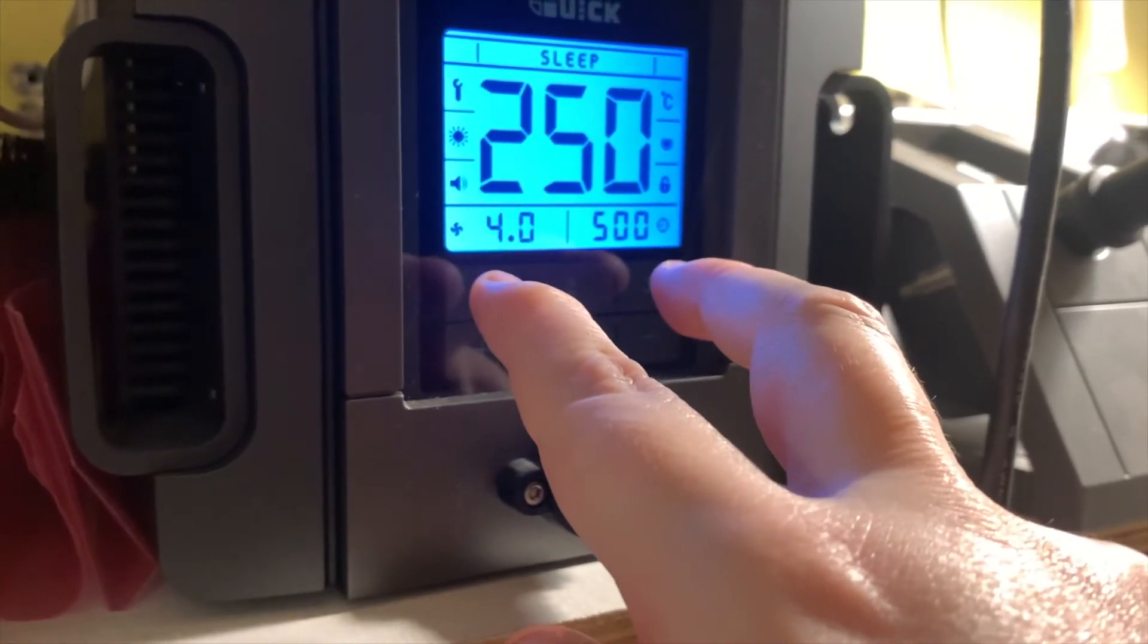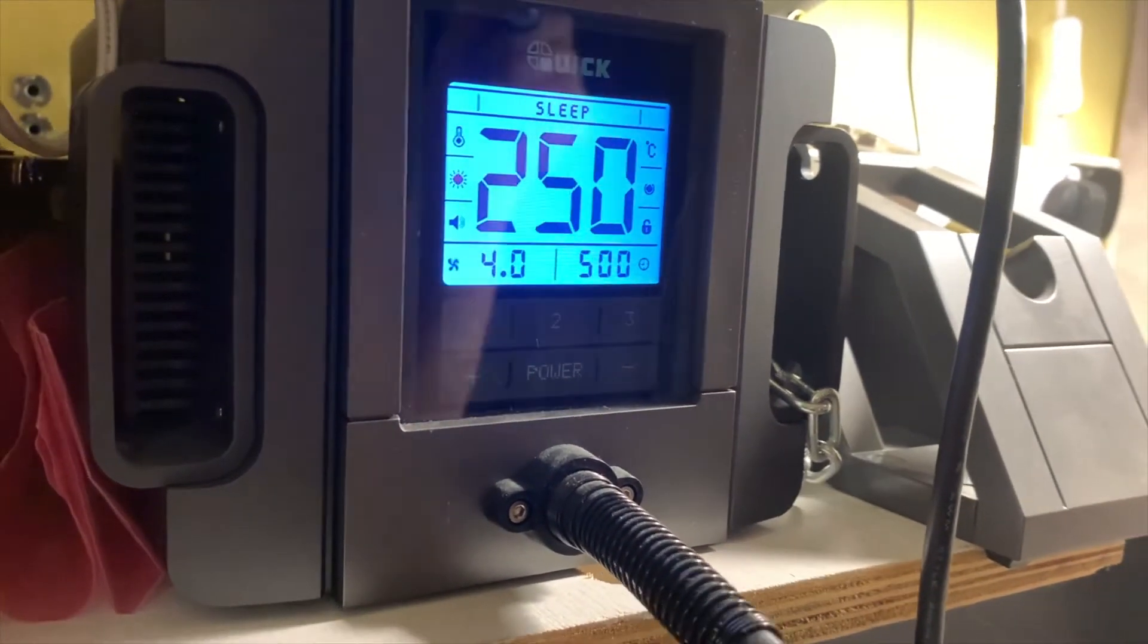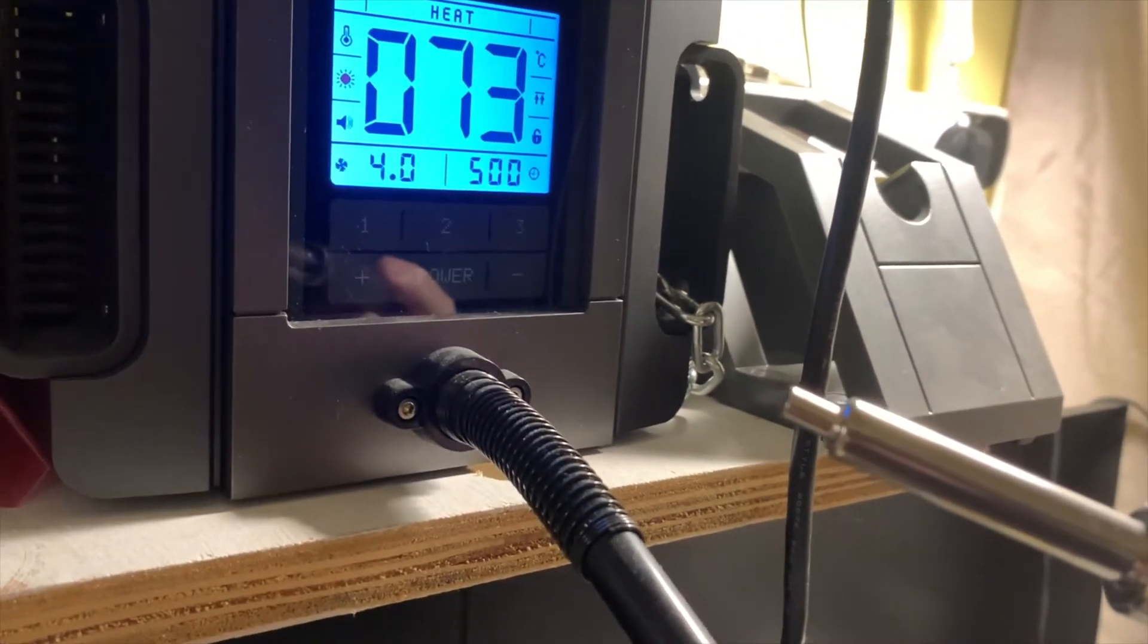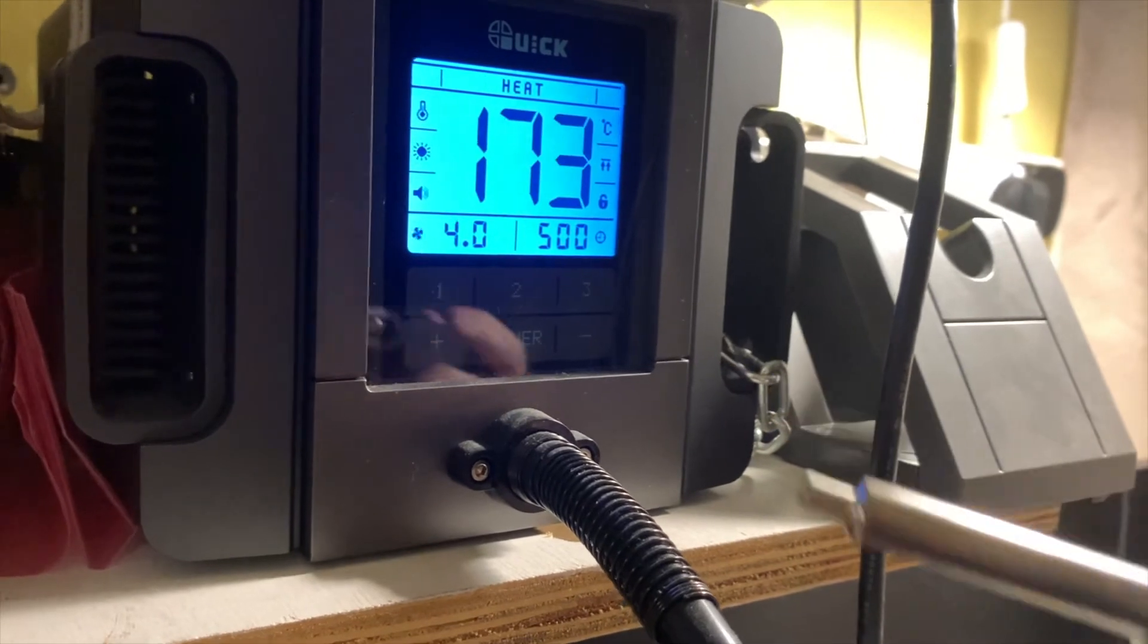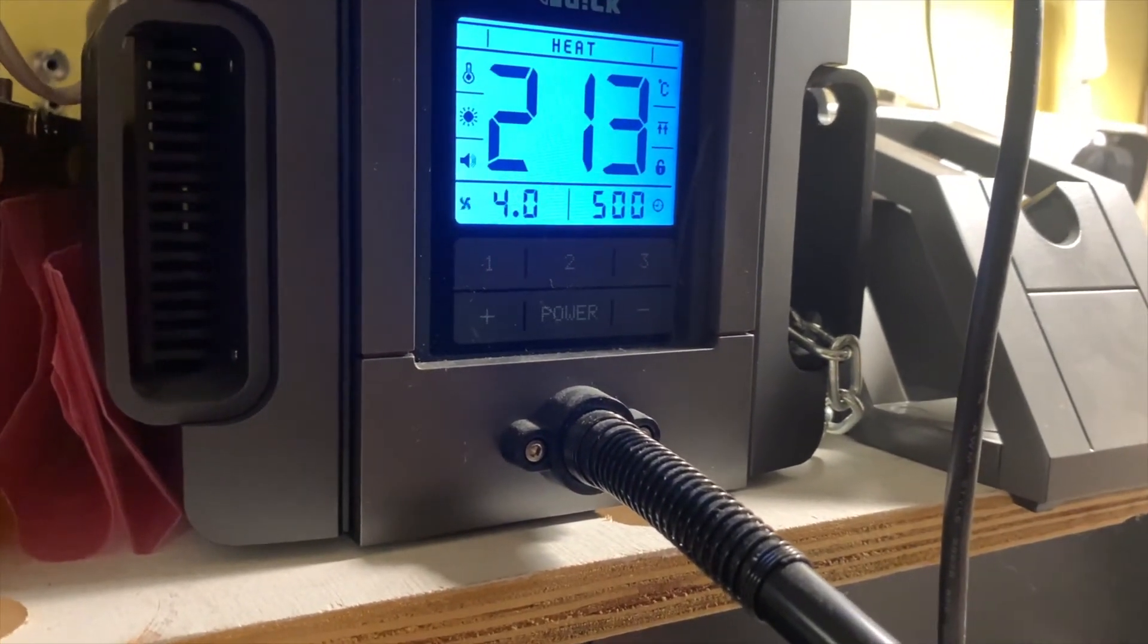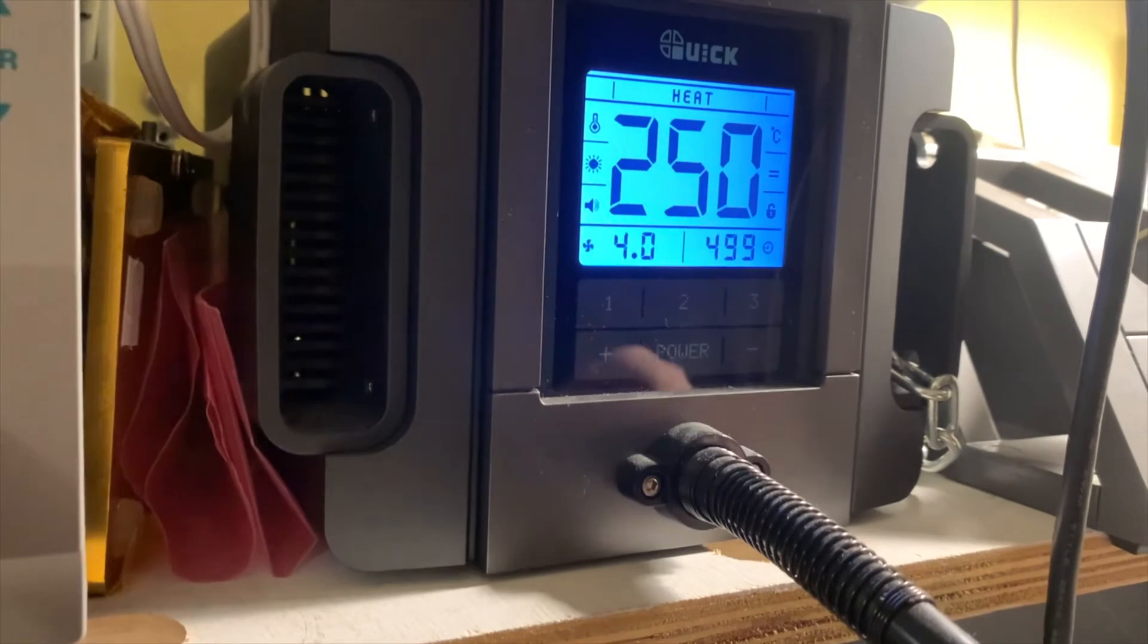Set your hot air station in calibrate mode. Set it for 250. And then you lift off the handset. This is the Quick TR-1100 model hot air station. It reaches temperature.